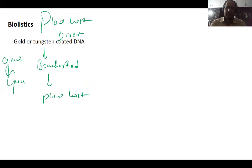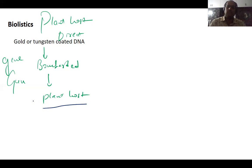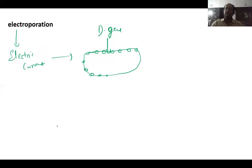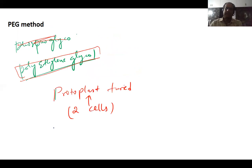Biolistics is a direct method used for plant hosts, with no vector involved. Gold or tungsten particles coated with micro particles of DNA are bombarded into the plant host — this is also called the gene gun method. Electroporation is another process, which can be vector or vectorless, using high-strength electric current impulses to form pores so the desired gene can enter the host. The PEG method — polyethylene glycol or protoplast fusion method — fuses two cells so the gene from cell A transfers to cell B or vice versa.